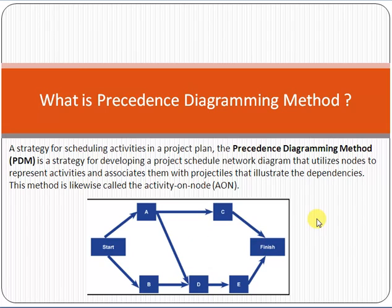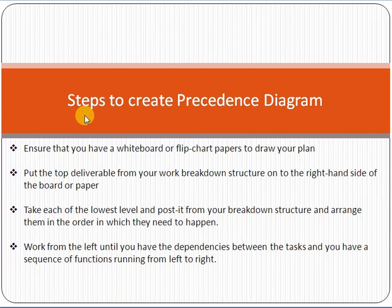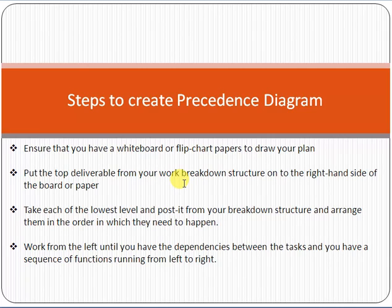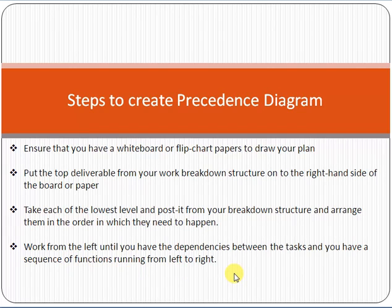This is the concept of the Precedence Diagramming Method: first identify the activities, then identify the dependencies among the activities, and then sequence the activities to make the schedule. The steps to create a precedence diagram include: ensure you have a whiteboard or flip-chart paper to draw your plan; put the top deliverable from your Work Breakdown Structure (WBS) — which means you divide the work and identify the activities until you can quantify them in terms of cost and time — on the right-hand side of the board. Arrange the lowest-level WBS tasks in the order they need to happen, working from left to right.